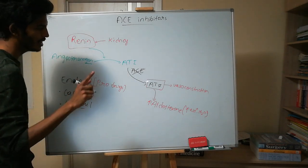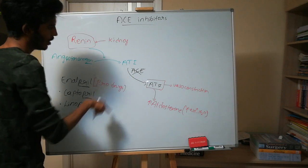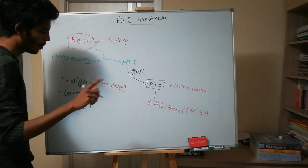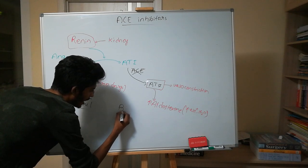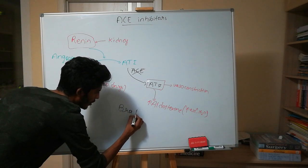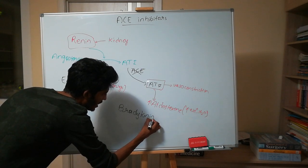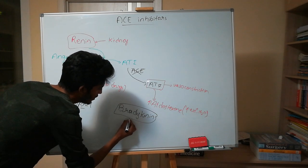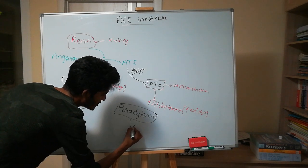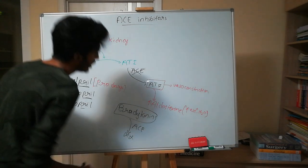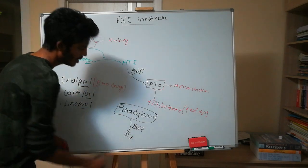One important thing about ACE itself: besides converting angiotensin one to angiotensin two, ACE is also required for breaking down bradykinin. Bradykinin is an inflammatory mediator, and it is also broken down by ACE.